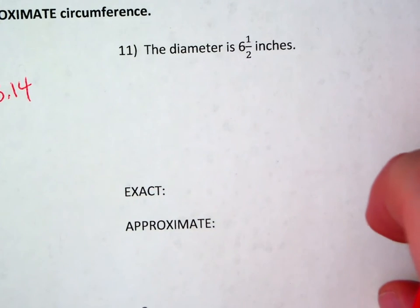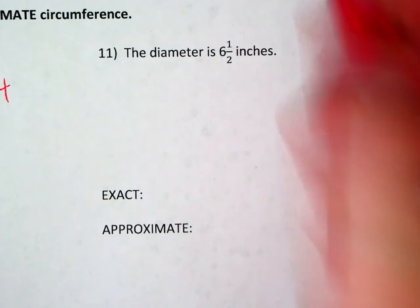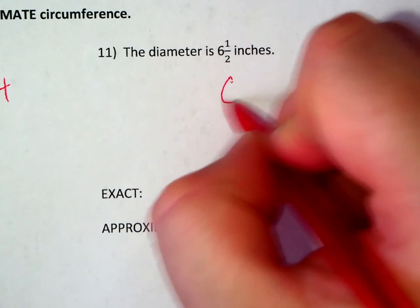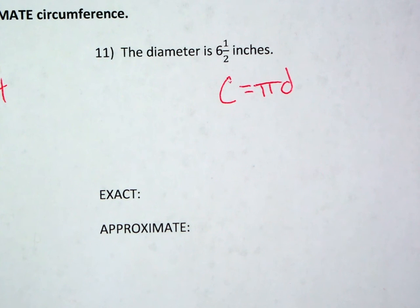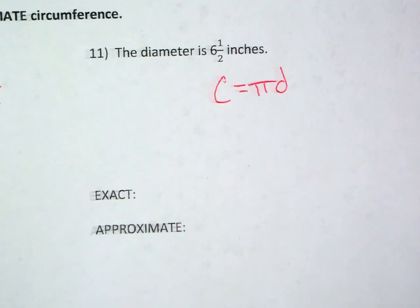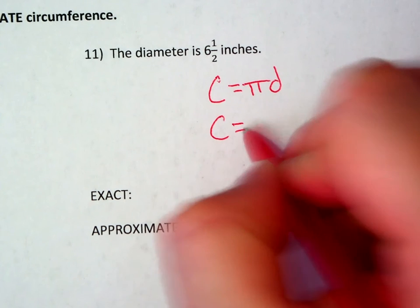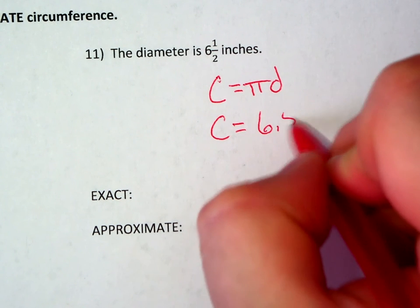Number 11. Diameter is 6.5 inches. So C equals pi D. Since my diameter is 6.5, I simply need to plug it in. C equals 6.5 pi.